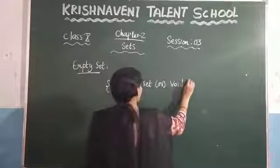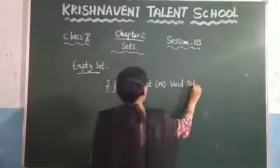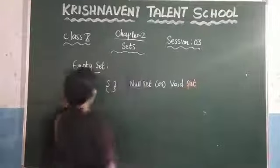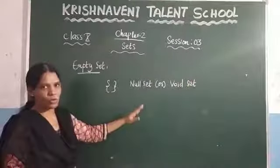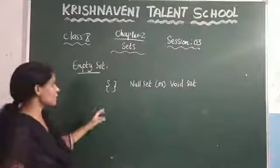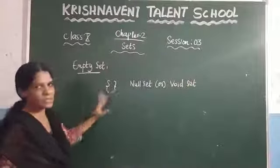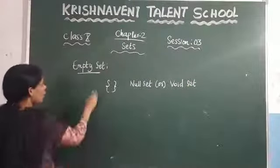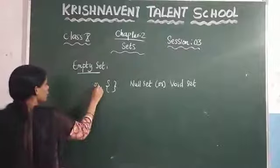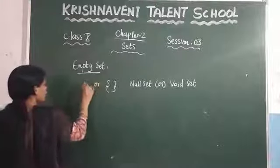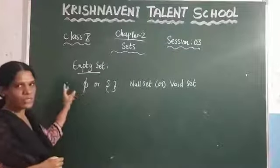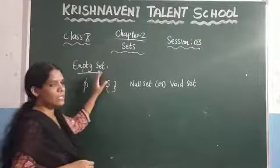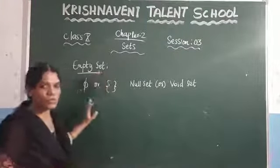We can call it in any of these ways: empty set, null set, or void set. It is represented by the symbol ∅, or you can denote it with empty curly braces {}. All of these notations indicate the empty set.